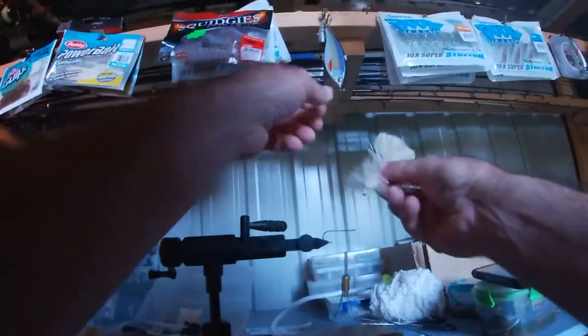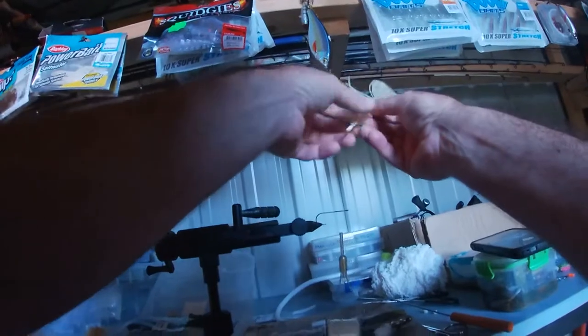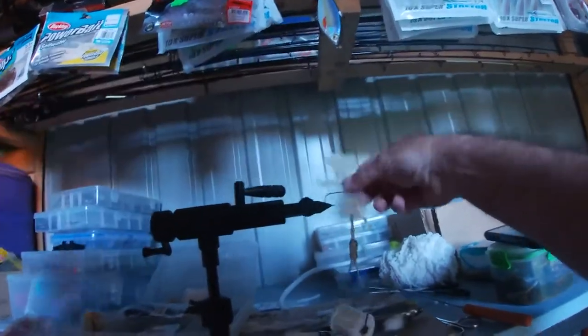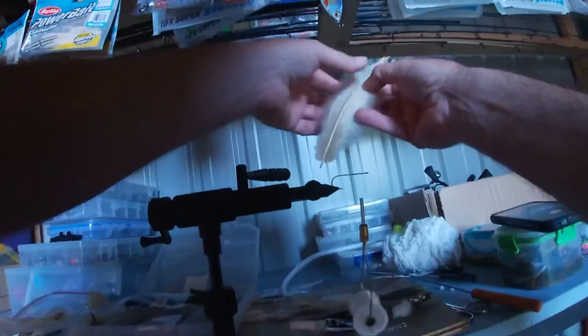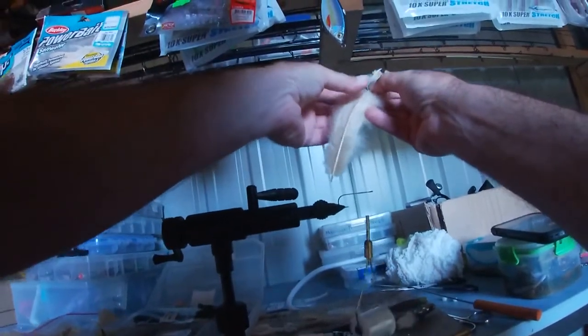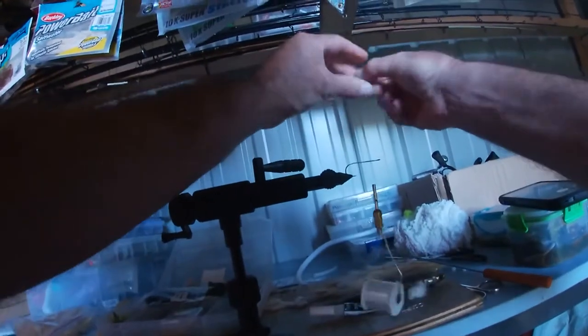And we'll get some body material. I'm just going to use a bit of this marabou just for the tail. I must grab a bit of a longer piece here so we've got a bit more of a longer body. So what I do is pull off just a bit like that, holding it in your fingers.